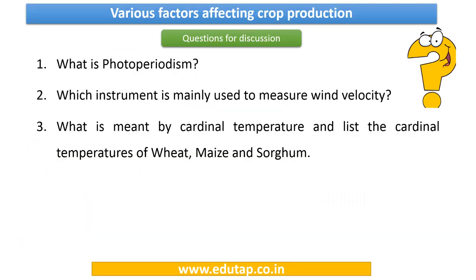Now we have come to the homework questions. Kindly discuss these questions and write your answers in the comment section below — we shall discuss the answers in the next video. The questions are: What is photoperiodism? Which instrument is mainly used to measure wind velocity? What is meant by cardinal temperature? List the cardinal temperatures of wheat, maize, and sorghum.